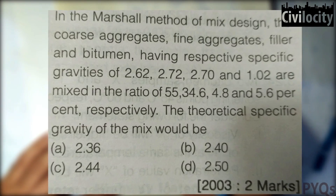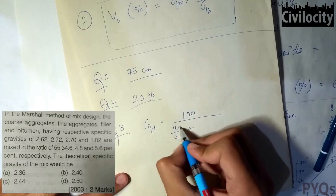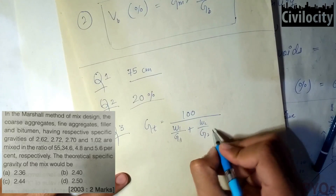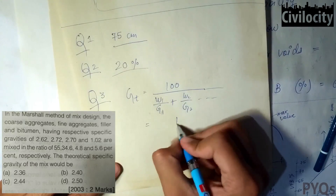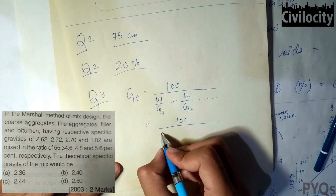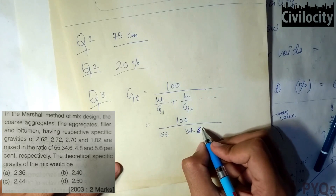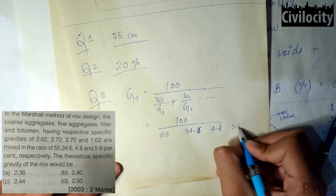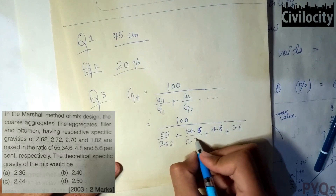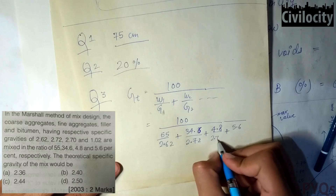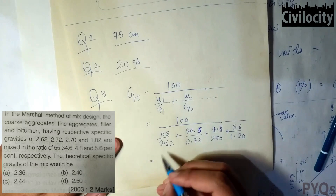The theoretical specific gravity of the mix is found using Gt = 100 divided by the sum of (weight percent divided by specific gravity) for each component. With ratios of 55, 34.6, 4.8, and 5.6, divided by specific gravities of 2.62, 2.72, 2.70, and 1.20 respectively, the answer comes out to be 2.44.